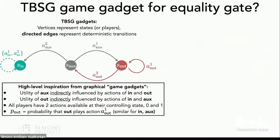We took inspiration from this graphical game reduction approach and wanted to see whether similar ideas work for TBSGs. Some ideas do transfer — it is possible to make a high-level connection where the vertices of the graph represent states and the directed edges represent deterministic transitions. But there are subtle differences, because now the edges don't just represent local connections between players; they also represent a more global type of structure, since out is influenced by both players through transitions.